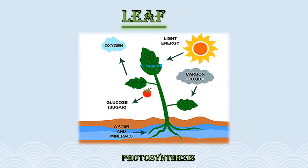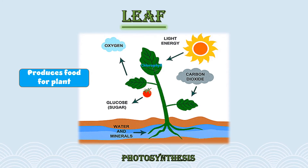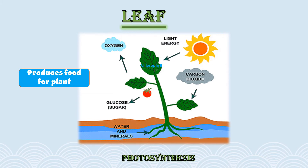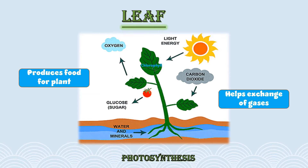Let's see the importance of the third main part of the plant — that is the leaf. Leaf produces food for the plant. We know that plants make their own food, and that's where the leaf comes into action. Leaves produce the food for the plant. Leaf also helps exchange gases in the atmosphere.